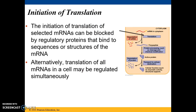Translation is another great opportunity to regulate gene expression, and this regulation usually occurs at the initiation stage of translation. In some cases, initiation can be blocked by regulatory proteins that bind to certain sequences, often within the untranslated regions at the five prime or three prime end, and this can prevent attachment of ribosomes, which would clearly prevent translation. This regulation can be of selected messenger RNAs, but there can also be more global control of all mRNAs within a cell, usually involving activation or inactivation of one or more of the protein factors needed to initiate translation.